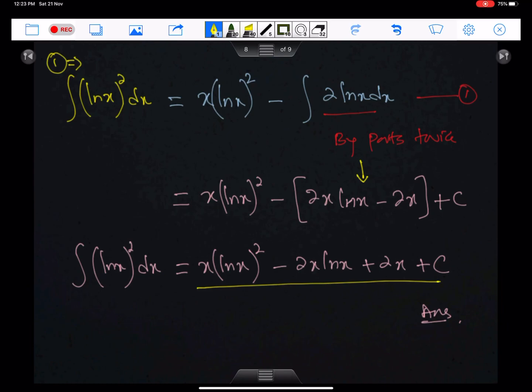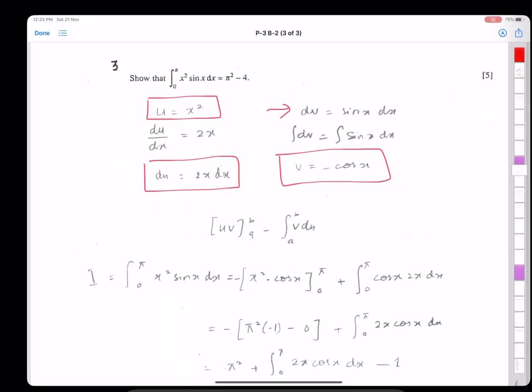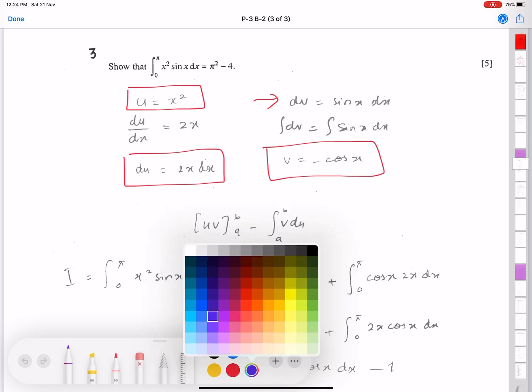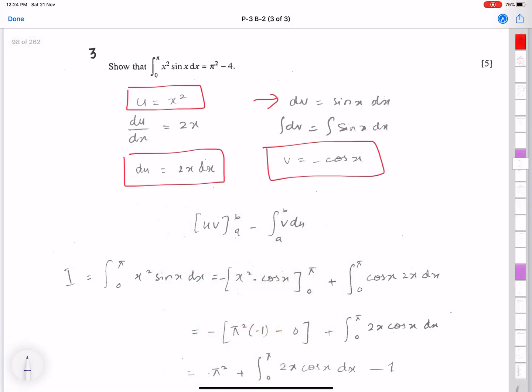Now let's discuss one more example of by-parts: x square sin x. Here we use by-parts twice because this is u and the function of u has power 2. So this means use by-parts twice. This is the first time we are using by-parts. This is u - x square is u - and this sin x dx is dv. So we always differentiate u to get du. This is du and this is v.